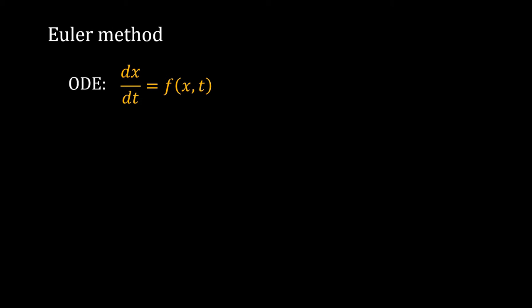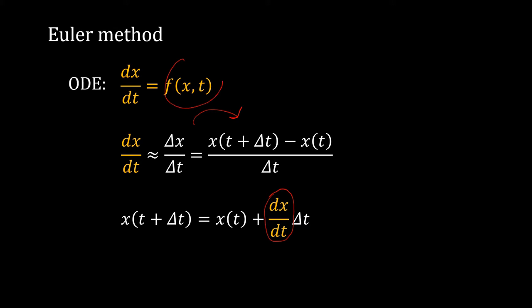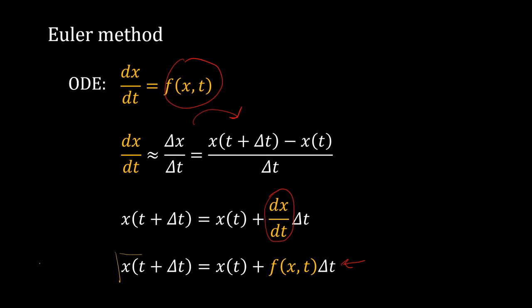Suppose an ODE given to us is dx/dt equal to a function of x and t. I can do an approximation and write dx/dt as approximately equal to delta_x / delta_t. I can further expand delta_x into x at (t + delta_t) minus x at t. Rearranging terms, I can write x at (t + delta_t) = x at t plus dx/dt times delta_t. This dx/dt I can replace with my function in the ODE. This equation is at the heart of solving ODEs using Euler's method.